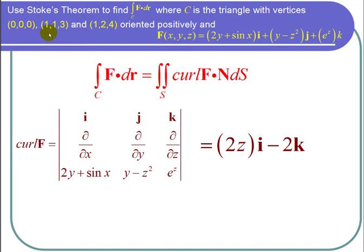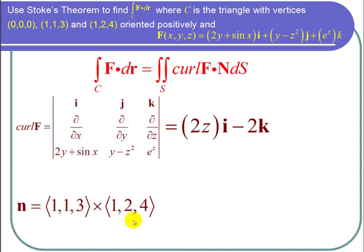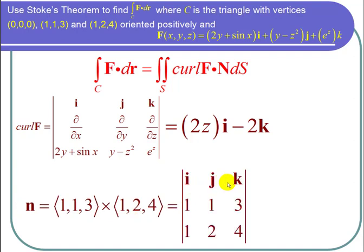So I take the cross product of the first displacement vector, which is (1,1,3), and the second displacement vector, which is (1,2,4). So I work that cross product out.